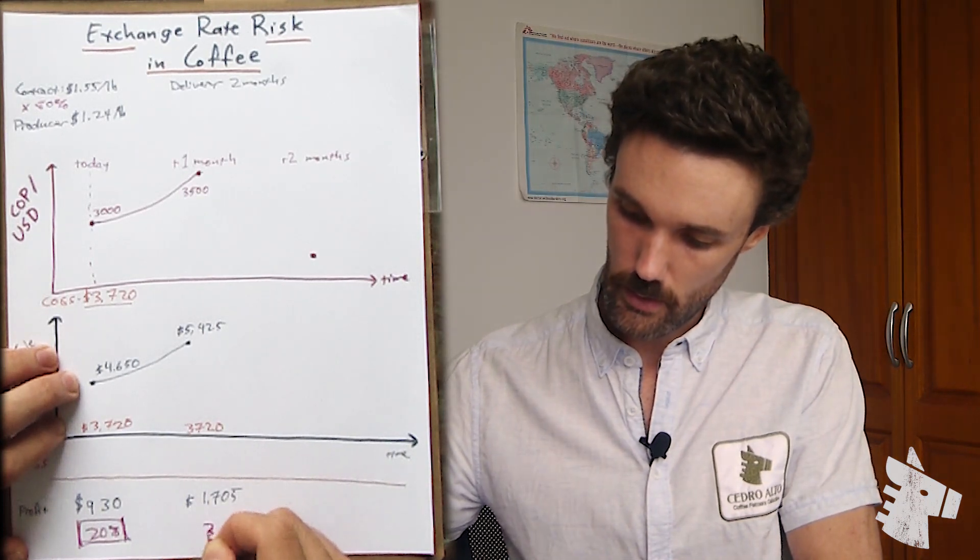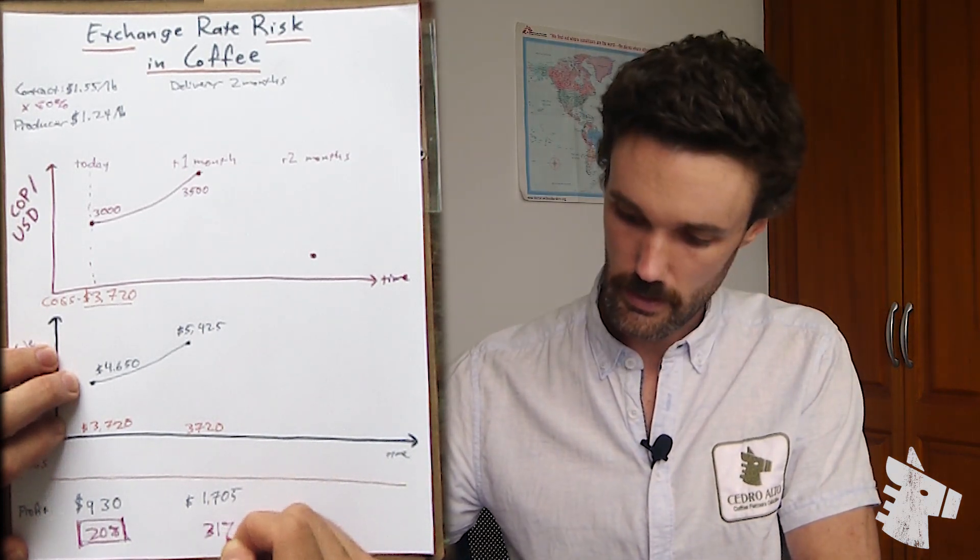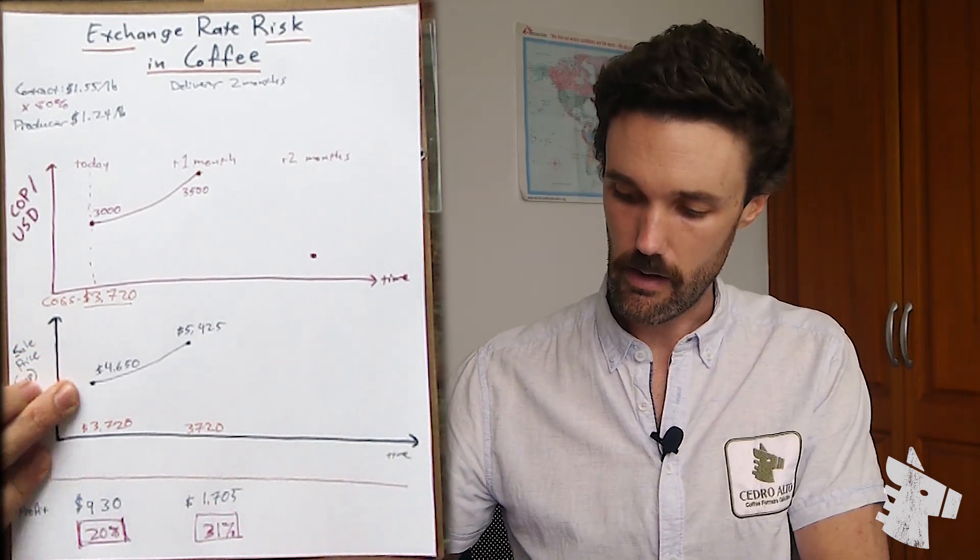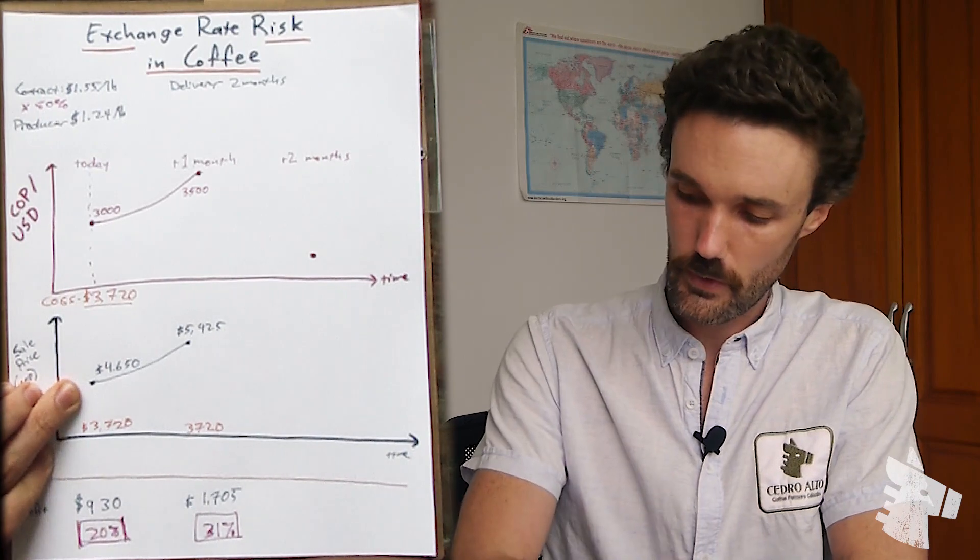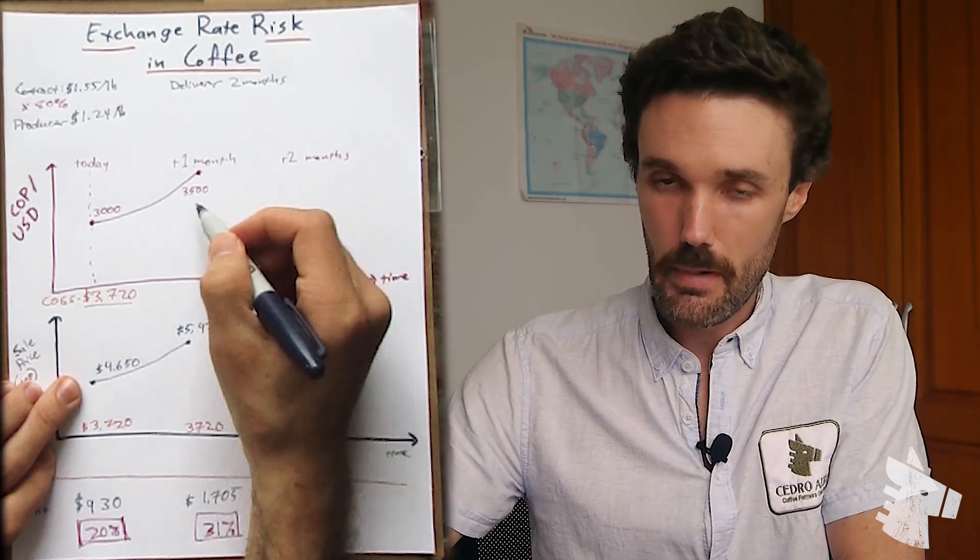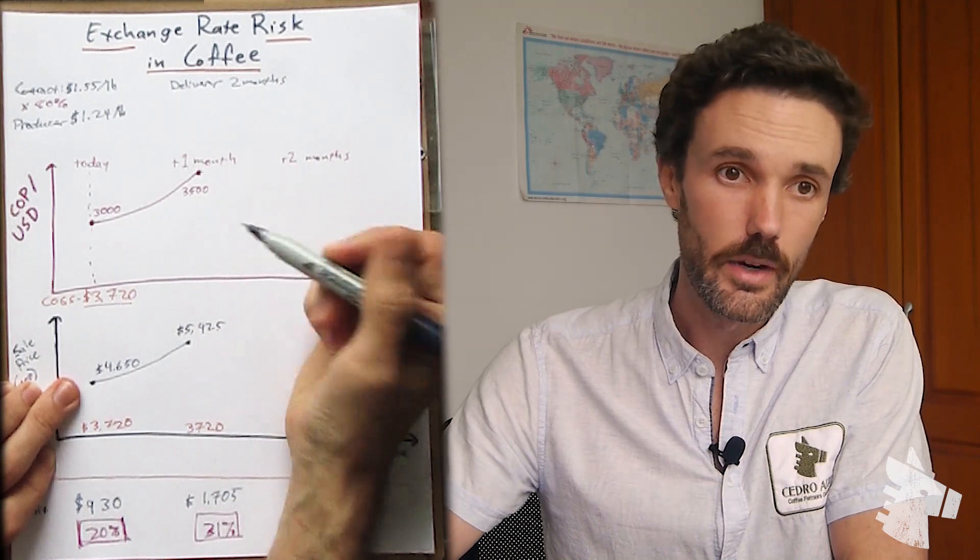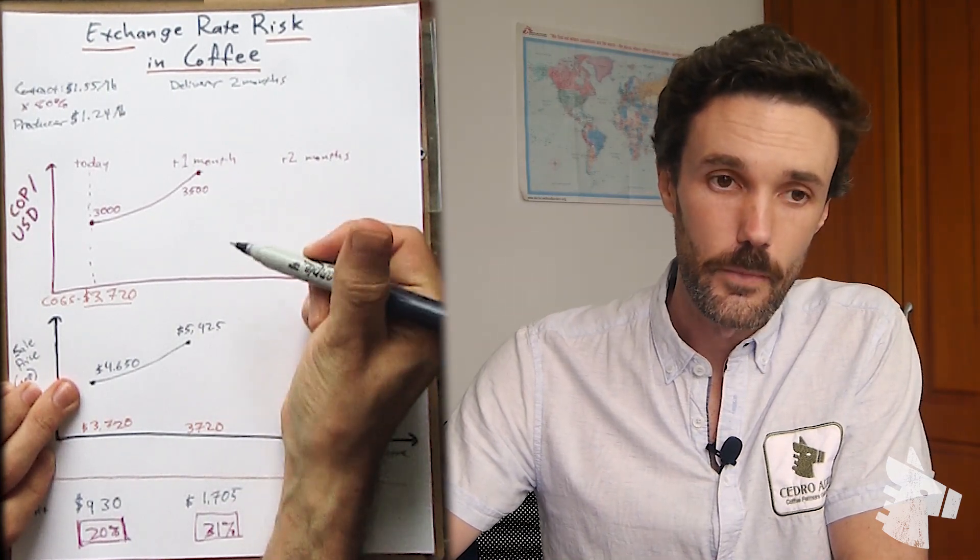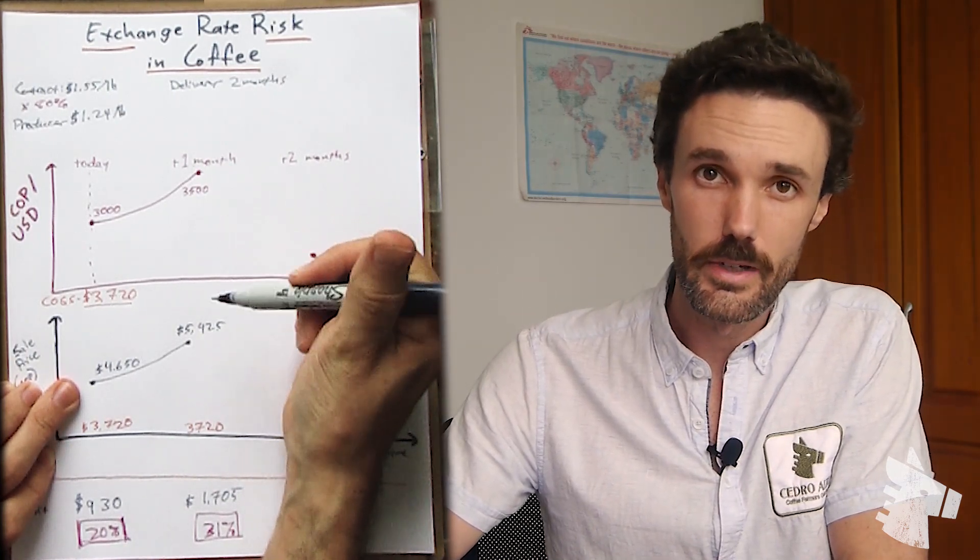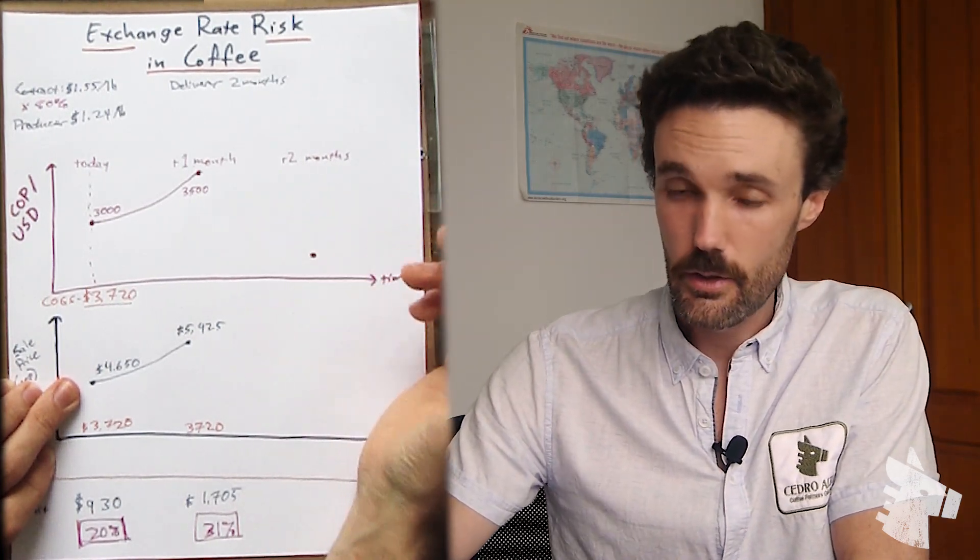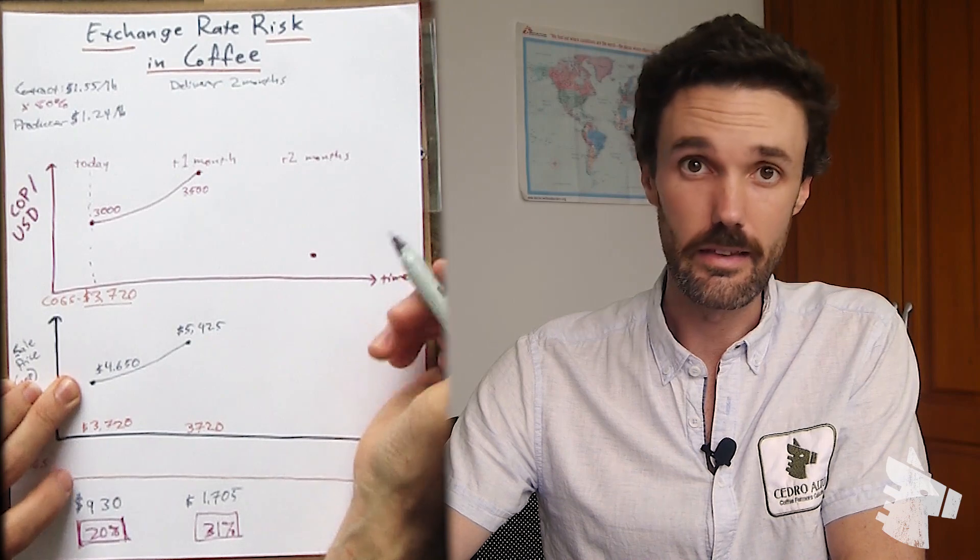Now, without doing anything differently, just because of that fluctuation in the value of the peso versus the dollar, our profit margin went up to 31%. But after one month, we're still in the middle of milling. We don't have freight booking yet. We don't have our original documents ready to send to the exporter so that they can pay us. It's still going to be about another month, and anything can happen in that month.